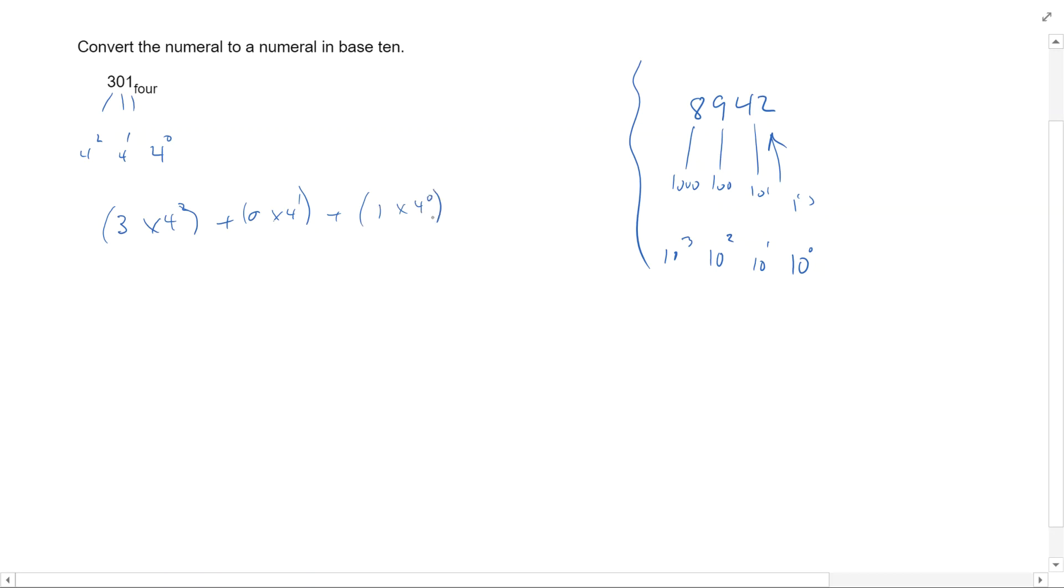Now we'll go ahead and multiply these out and add them together. Remember, exponents first. So 4 squared is 16. I'm going to have 3 times 16, or 48, plus 0 times 4, that's just 0. And then the last one, remember that anything to the 0 power is 1. So 1 times 1 is 1. So we have 48 plus 0 plus 1, that's going to give us 49.